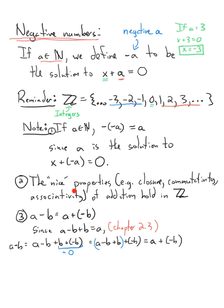The second note, which is very important, is that the nice properties of addition that we talked about — commutativity, associativity, closure (remember, closure means that if we add two numbers, the result stays in the set where the numbers came from) — those properties still hold with the integers. We retain all our nice properties of addition, which is fantastic.